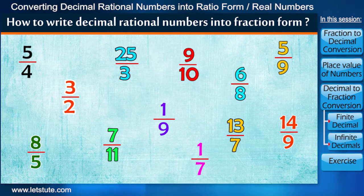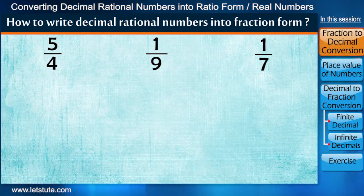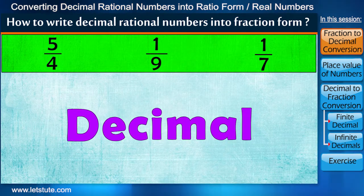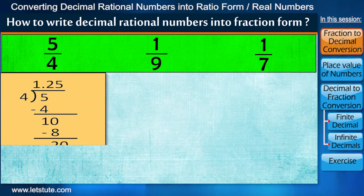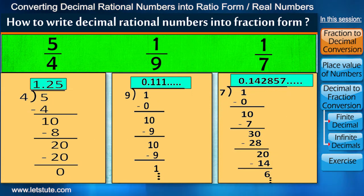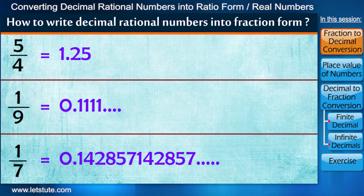Let's pick any three of them. If I ask you to write these fractions in form of decimals, then you'll simply divide the numerator by denominator in each case and get the decimal form.